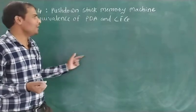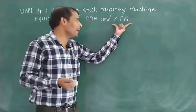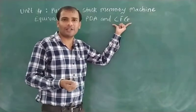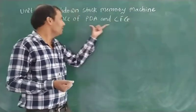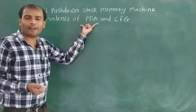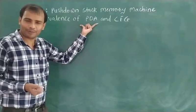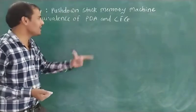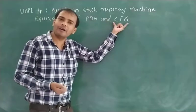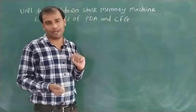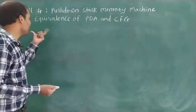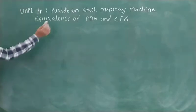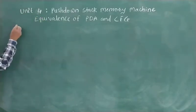This means that the language generated with the help of CFG is the context-free language, and the PDA can accept or recognize the context-free language — meaning we can construct a PDA for the context-free language. Here is one example: construct the PDA for the following context-free grammar.